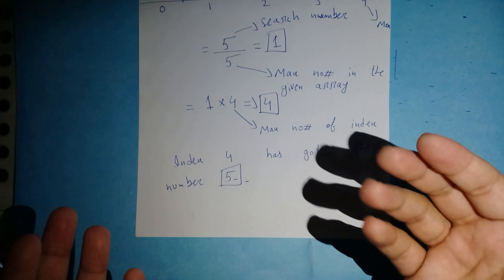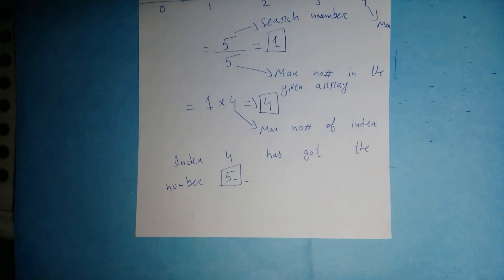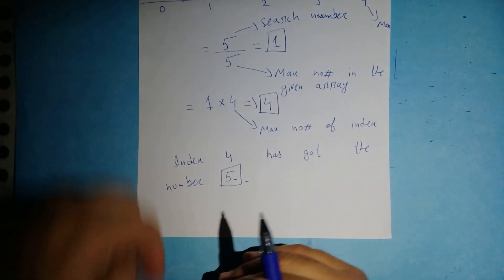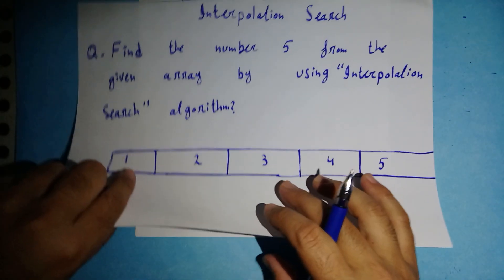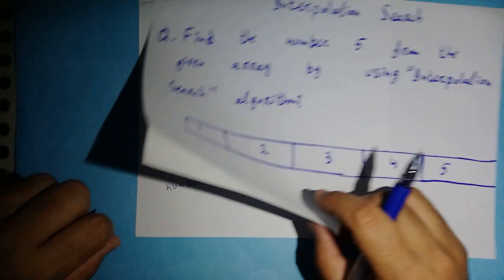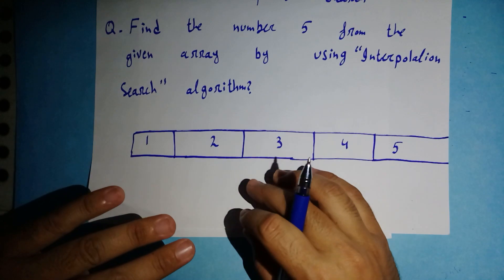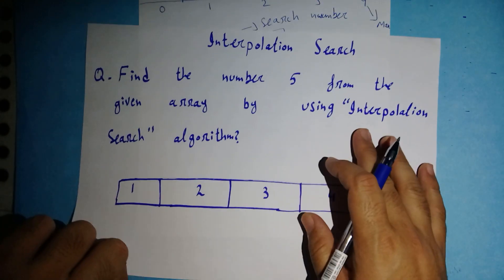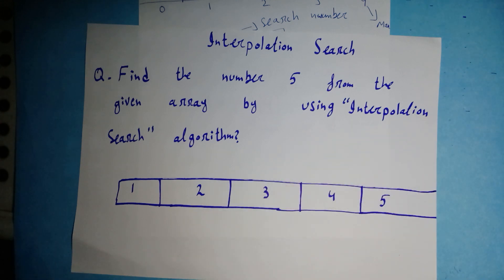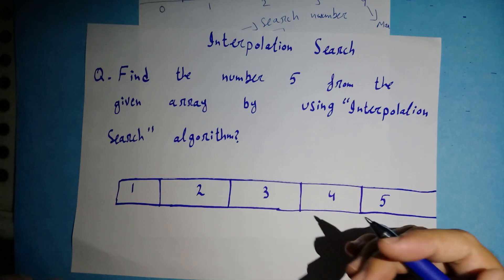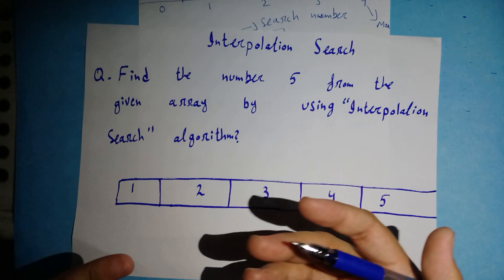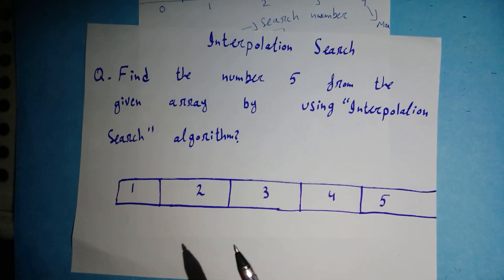Interpolation search tells you the index number of the searching number. I hope you understood how to find any search number from a given array using interpolation search algorithm. If you have any questions, you can comment and I'll reply as soon as possible. It's very easy — not that difficult. If you have any confusion, feel free to ask. Please subscribe to my channel, like the video, and press the bell icon. Allah Hafiz and take care.